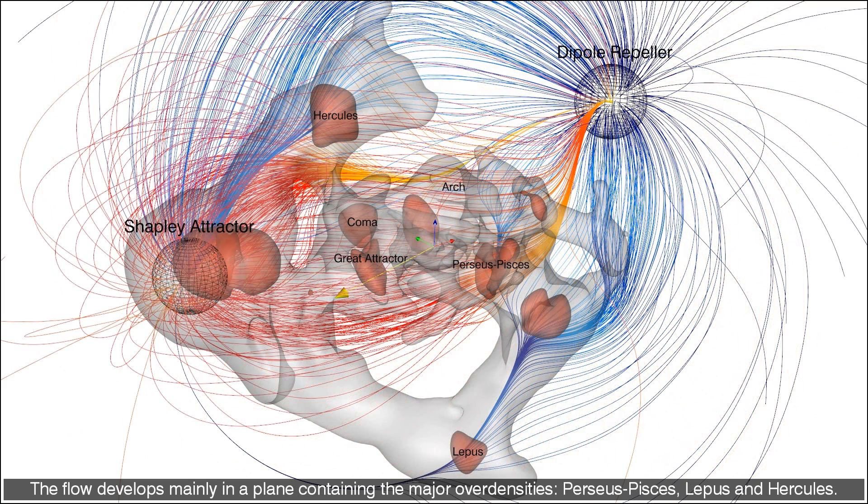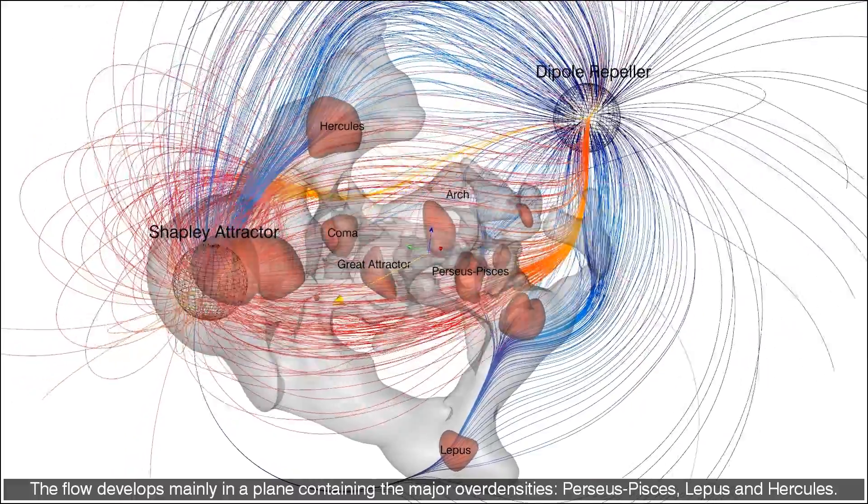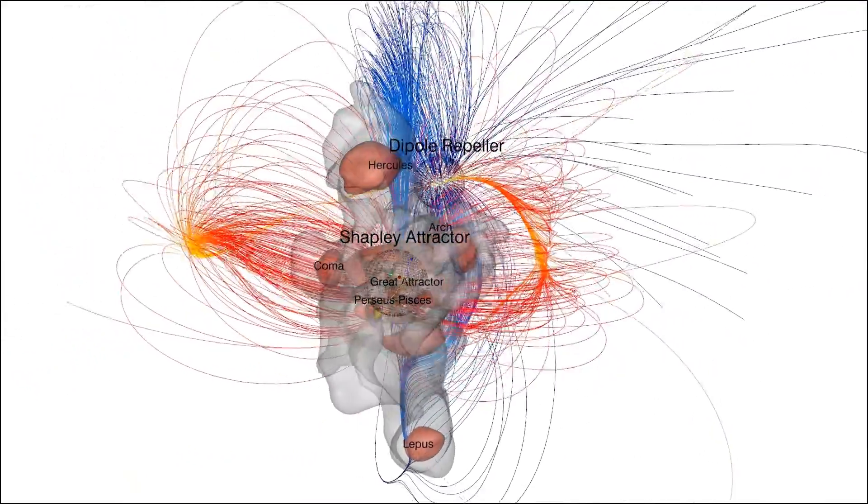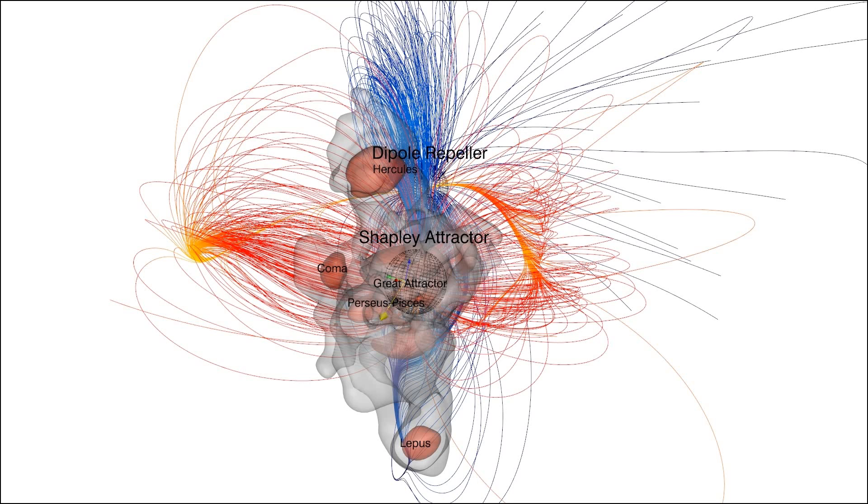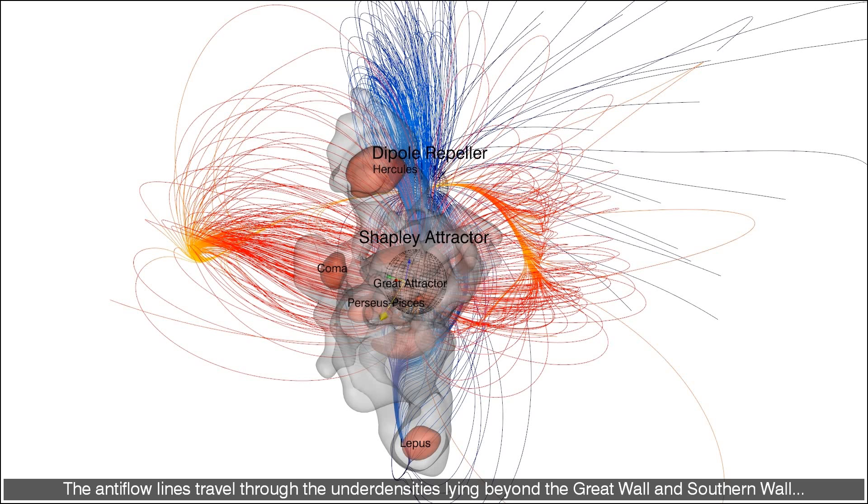The flow develops mainly in a plane containing the major overdensities: Perseus Pisces, Lepus and Hercules. The antiflow develops in the orthogonal plane that corresponds roughly to the supergalactic equator. The antiflow lines travel through the underdensities lying beyond the Great Wall and southern wall, on their way to the region of lowest density, the dipole repeller.